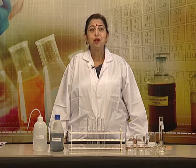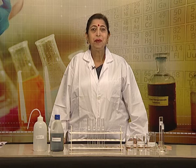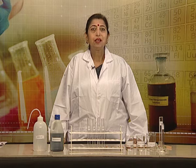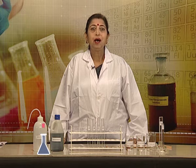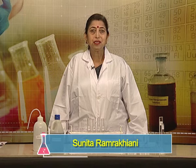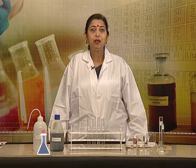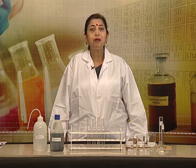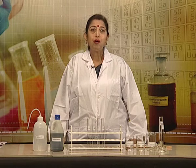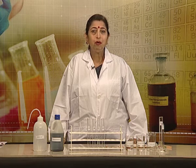As you are aware, solutions having pH value less than 7 are acidic in nature, while solutions having pH value higher than 7 are basic in nature. Suppose we have an acid solution having pH value 4. What will happen to its pH value on dilution? Similarly, we have a basic solution having pH value greater than 7, maybe 10. What will happen to its pH value on dilution?